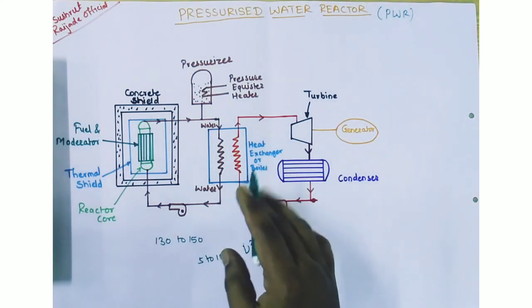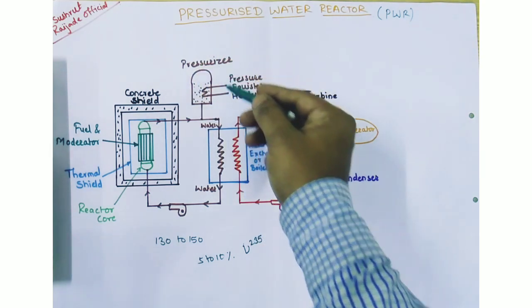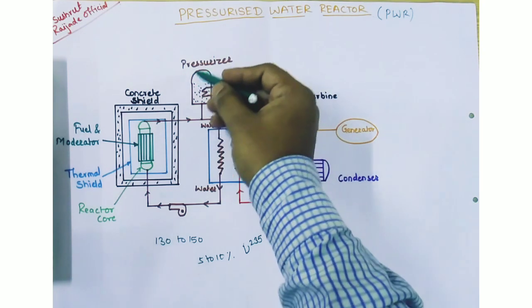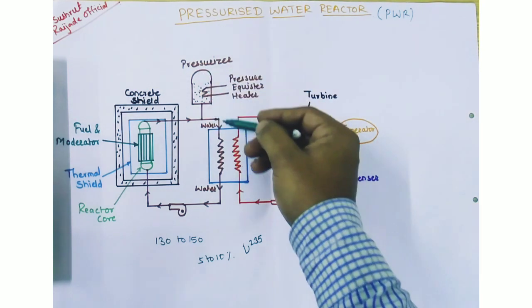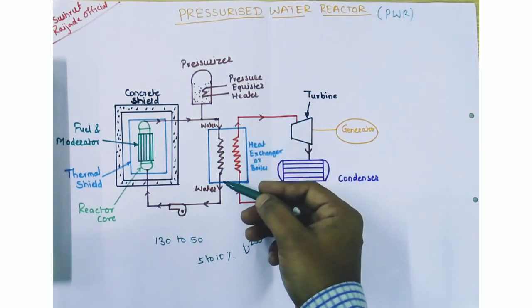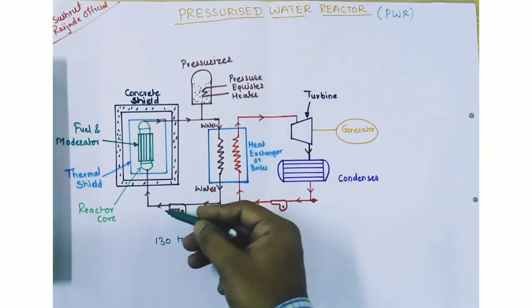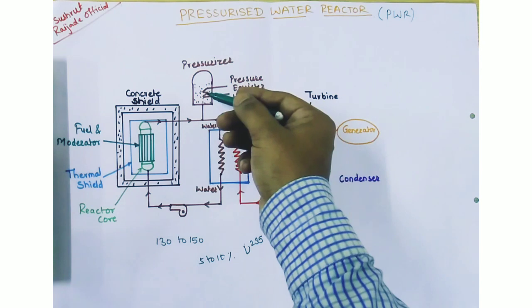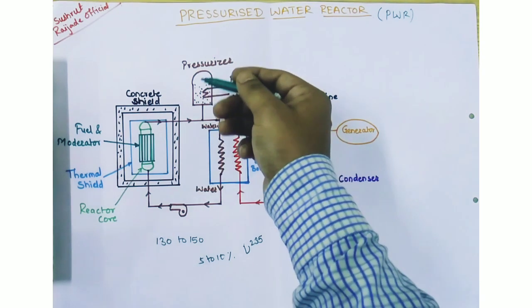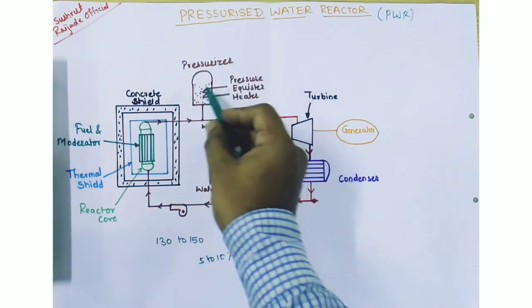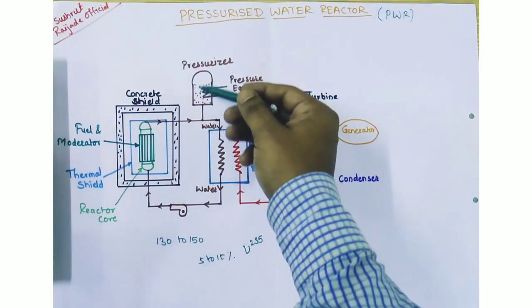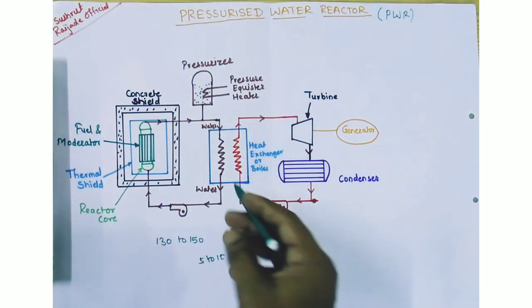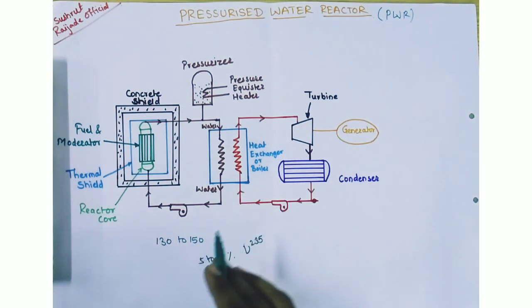Before starting the reactor, the water in the pressurizer is boiled and converted into steam. That steam is stored in the dome-shaped pressurizer, and the pressurized water is then circulated through the heat exchanger and towards the reactor core. A heating coil is used to produce steam and raise the water pressure up to 130 to 150 bar.